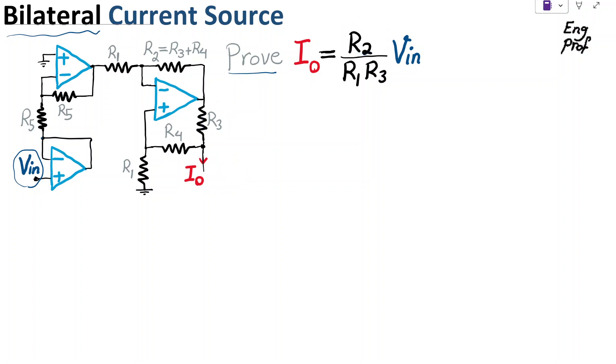And to start, we make the assumption that all the op-amps are properly biased, so the supply voltages, positive and negative, are properly applied and negative feedback is dominant in all the op-amps: op-amp number 1, 2, and number 3.